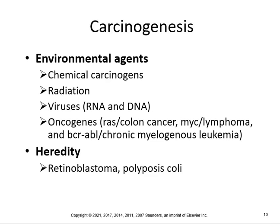Environmental agents include chemical carcinogens, radiation, and viruses. RNA and DNA oncogenes — make sure you know what oncogenes are. They are associated with colon cancer, lymphoma, and chronic myelogenous leukemia. Hereditary factors can lead to retinoblastoma or polyposis coli. Chemical carcinogens include cigarette smoke, exhaust, and insecticides. Natural sources of radiation include too much sunlight and x-rays.